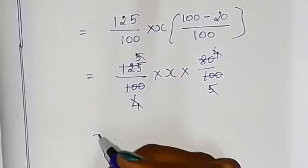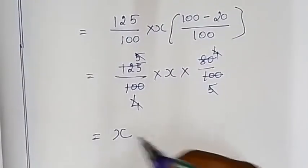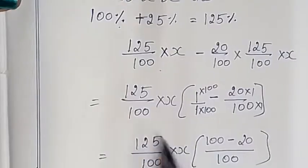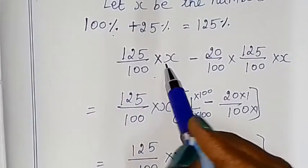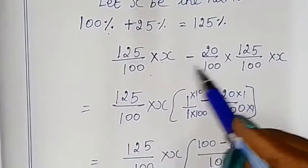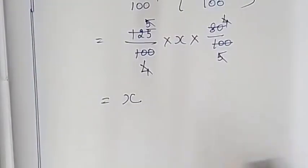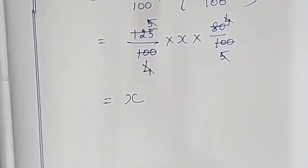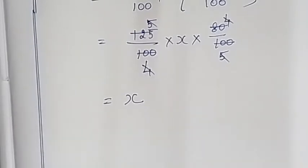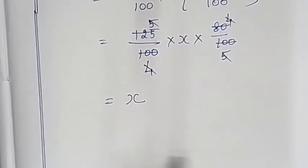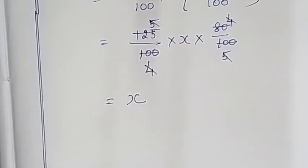The answer is x. So x is the value after the 25% increase and the 20% decrease. The final value equals the original value, so there is no change in the value and no change in the percentage.